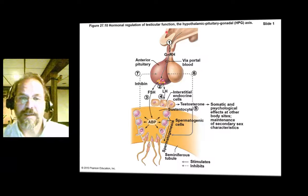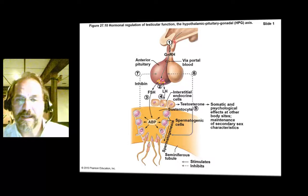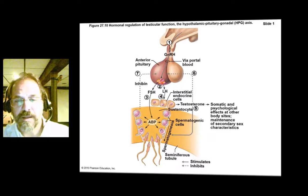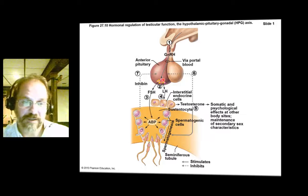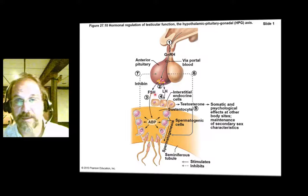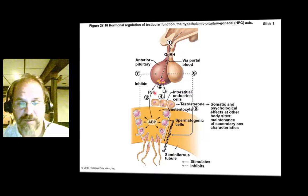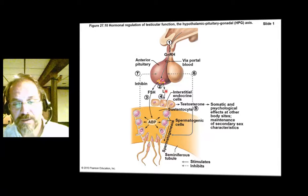Here we have a diagram showing that characteristic W-shape of the hypothalamus. The hypothalamus triggers the release of FSH and LH from the anterior pituitary by signaling with GnRH, gonadotropin-releasing hormone. The anterior pituitary responds by secreting follicle-stimulating hormone, FSH, and luteinizing hormone, LH. Remember, FSH and LH are named for their roles in the female reproductive system, not in the male, but they're the same hormone. These hormones travel in the bloodstream down to the testes.